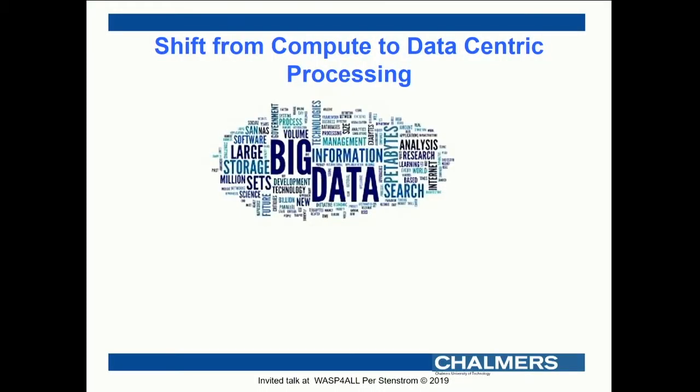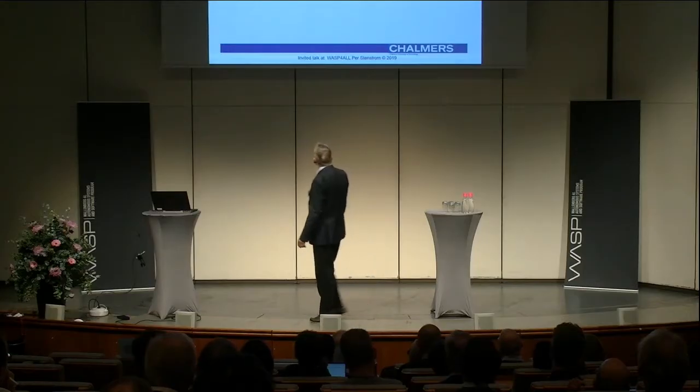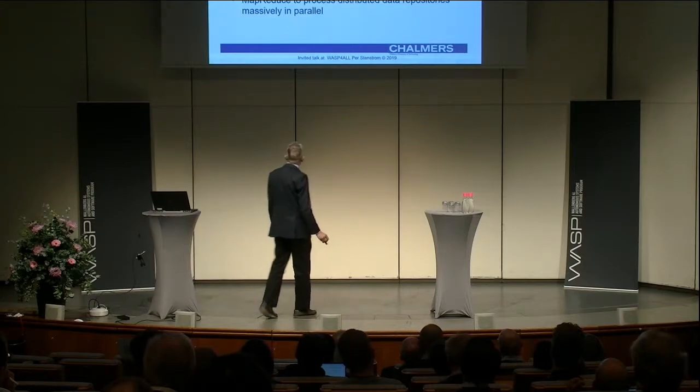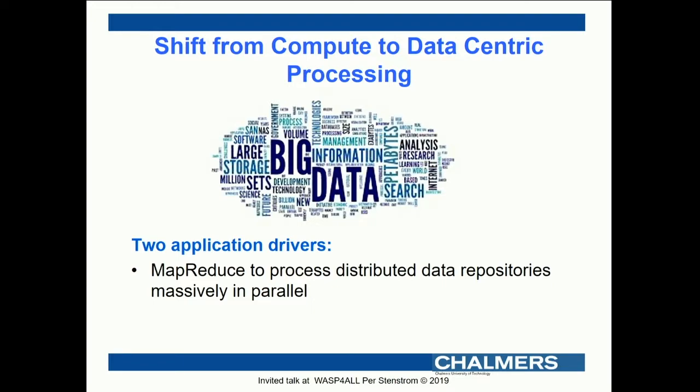What is also happening, as we clearly see in AI, is that in the past systems have been compute-centric — we worried more about the compute elements than about how to deal with the data. This has changed because of more data-centric computing. We have seen it with MapReduce, which processes distributed data repositories massively in parallel, and also with machine learning, which processes giant sets of training data. We have entered an era of data-centric computing.